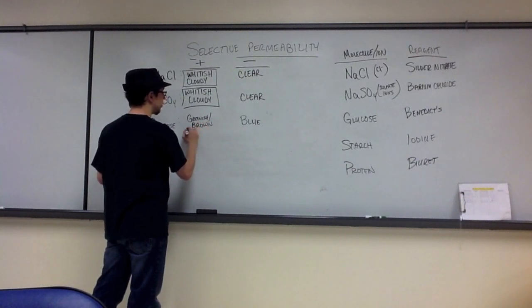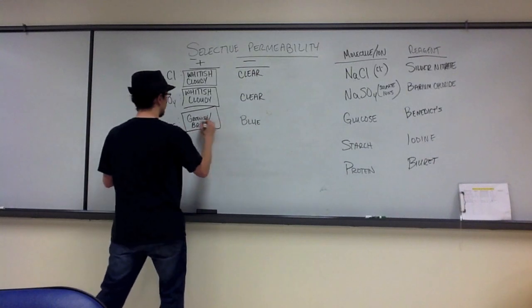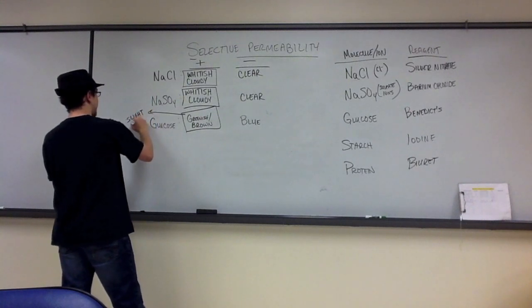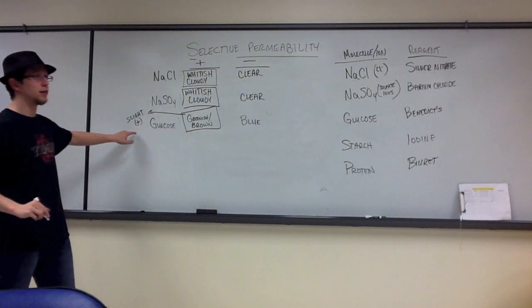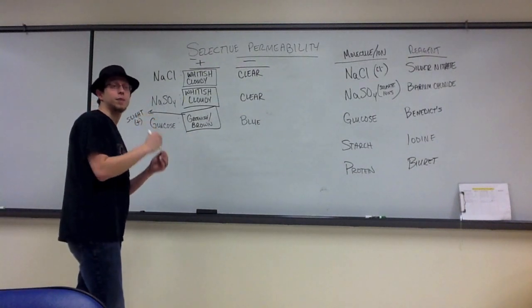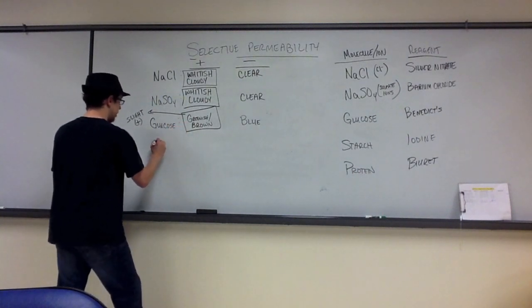That is still an acceptable positive result. But I should note that this denotes a slight positive result. So that greenish-brown color, while it is still positive, is a slight positive compared to what we saw when we did macromolecules, and we got that very defined reddish-brown.